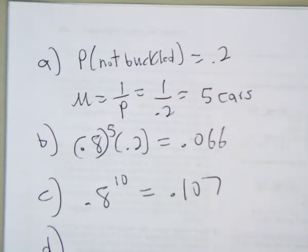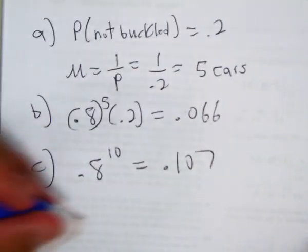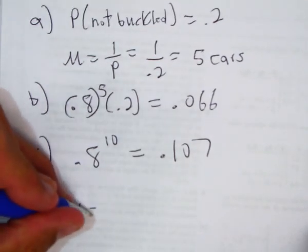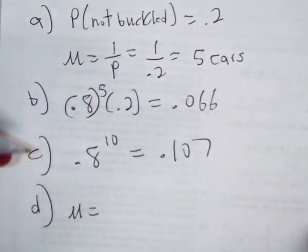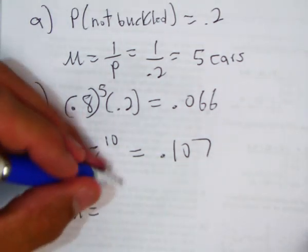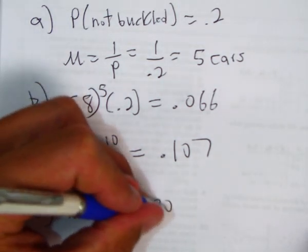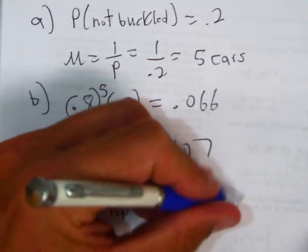In D, if they stop 30 cars during the first hour, find the mean and standard deviation. The mean of drivers expected to be wearing their seatbelts is NP, which is 30 times 0.8, which is 24.